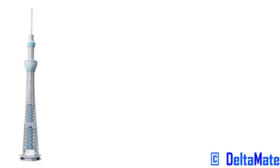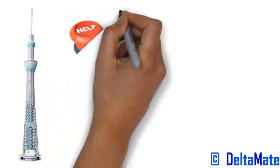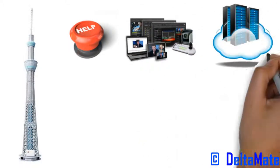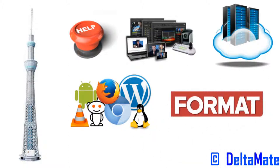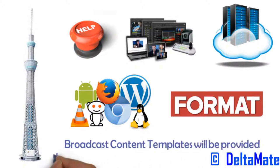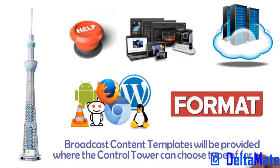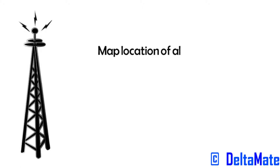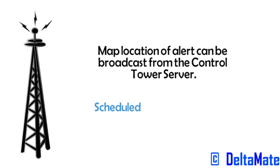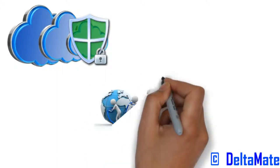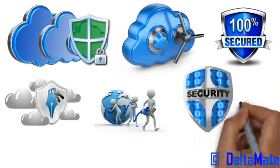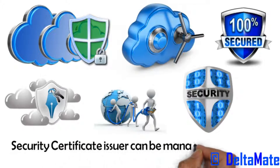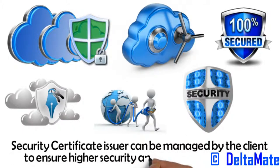Broadcast control tower software helps in authoring and controlling content broadcast by the cloud server to the devices. The software can be configured to set the screen content format and the type of media to be displayed. Broadcast content templates will be provided where the control tower can choose the type of format. Instant alerts along with map location of the alert can be broadcast from the control tower server. Scheduled display of broadcast content is also supported. Security features include highly secured communication between cloud servers and connected devices. Each connected broadcast device is authenticated with a unique security certificate by the cloud servers, and the security certificate issuer can be managed by the client to ensure higher security and save certificate costs.